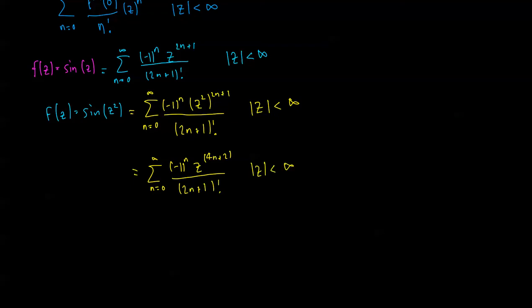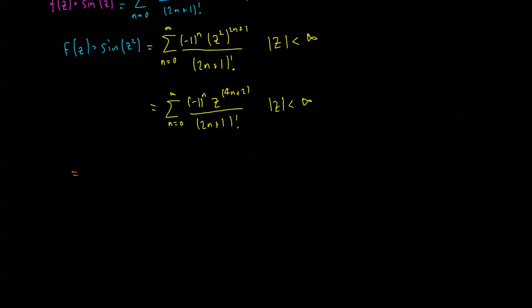So let's have a look at the first few terms of this series. So when n is equal to zero, I get negative 1 to the power of zero, which is positive 1, z to the power of 4 times zero plus 2, so I do get a z squared, that's the first term, on 2n plus 1 factorial, so n is zero, so I get 1 factorial, so I just got a z squared.